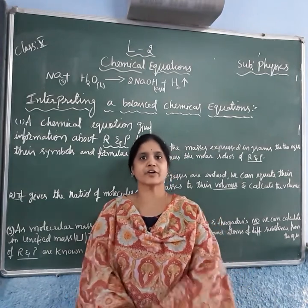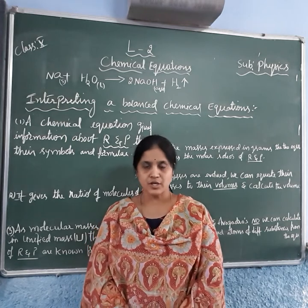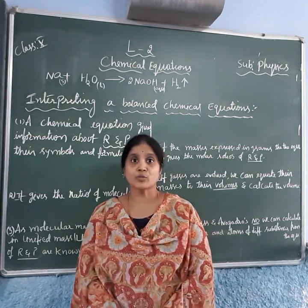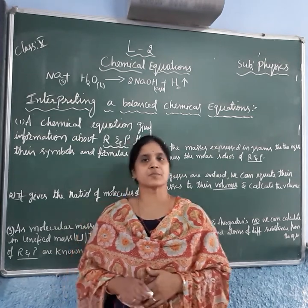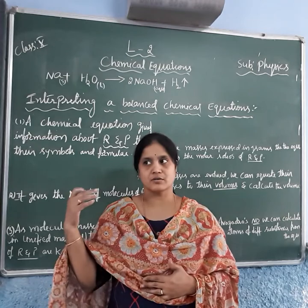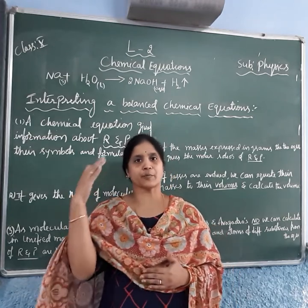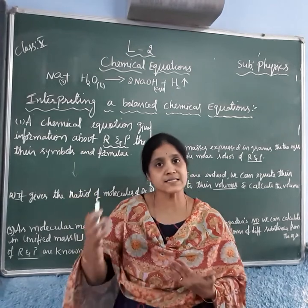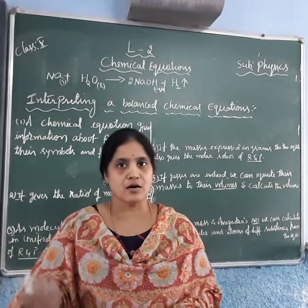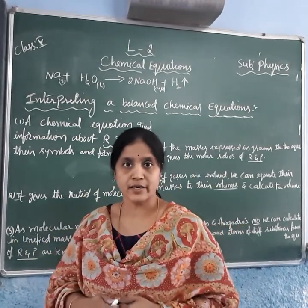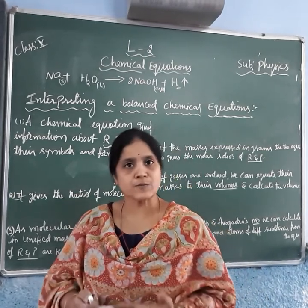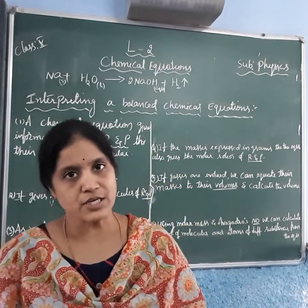Good morning students. In the last video we discussed how to balance a chemical equation, and also how to make it more informative by using symbols for gases, liquids, precipitates (shown with a down arrow), and gases evolved (shown with an up arrow). Now in this video I am going to explain what information we can interpret from a balanced chemical equation.